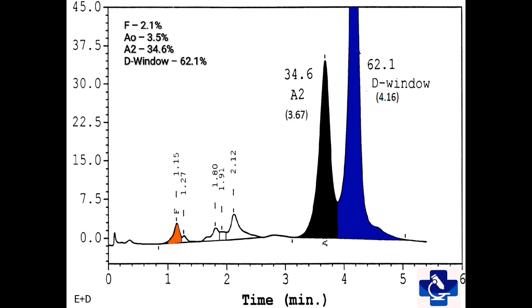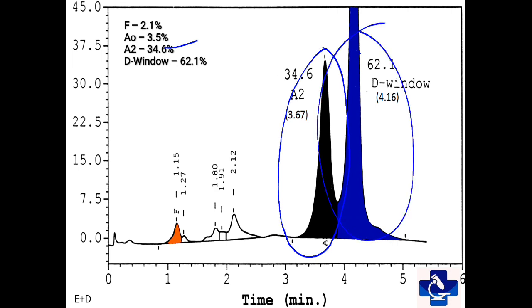In this graph, we can see that A2 is distinctly raised at around 34.6%. In the D window, we have around 62.1% and HbF is mildly raised. So this is the case of HbE and HbD double heterozygous.